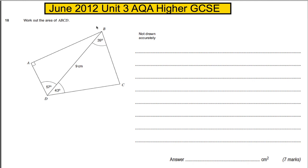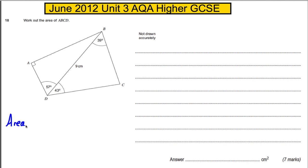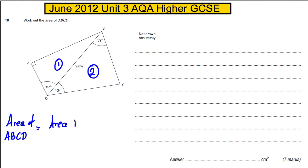We want to work out the area of ABCD. So let's just state to the examiner what we're going to do. The area of ABCD would be the area of the two triangles added up — the area of this right angle triangle plus the area of this one. It would be area of one plus the area of two.